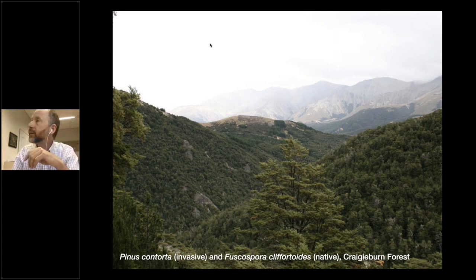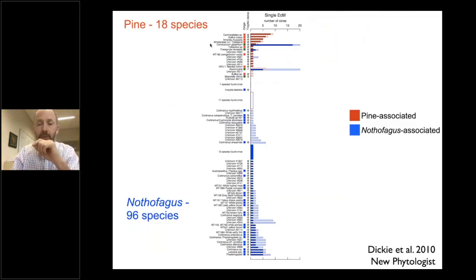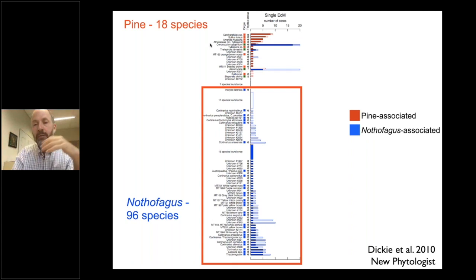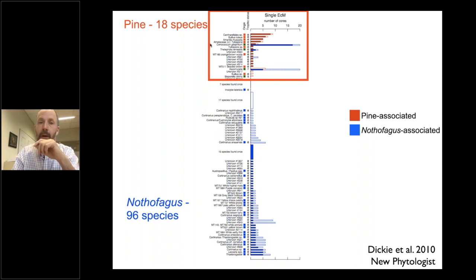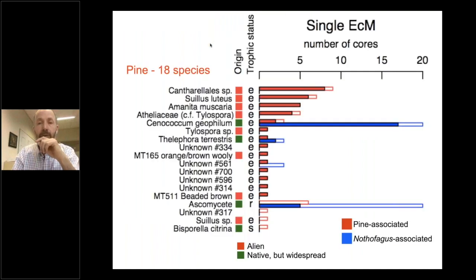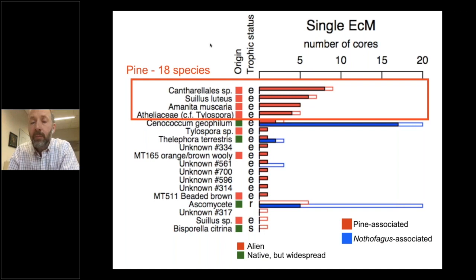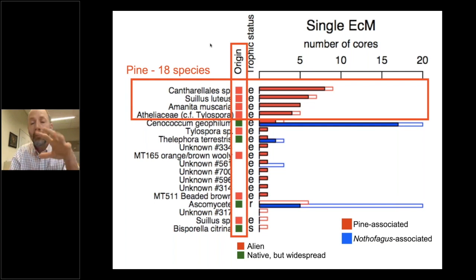This is the sort of data we get — there's an awful lot of blue, which are all the species of fungi we found associated with our native beech trees. At the top, there's a much smaller section of red, which are those fungi we found associated with pine. If you look at the most dominant — those that were most frequent — all of them were only associated with pine; they were never found on our native beech trees. We coded those as to where those fungi came from, and what we found is that all of those dominant fungi were alien species. They were not native to New Zealand and they were co-invasive — invading along with the pine trees.